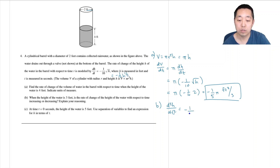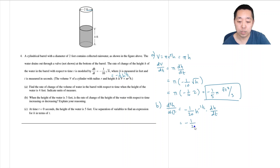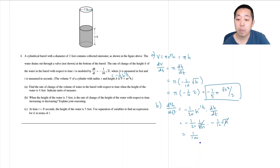The derivative becomes negative one over twenty times one-half times h to the negative one-half. But by the chain rule I multiply by dh/dt, giving negative one over twenty times one over the square root of h, times negative one over ten times the square root of h. The square root of h terms cancel, leaving one over 100. Since this is greater than zero, dh/dt is increasing.